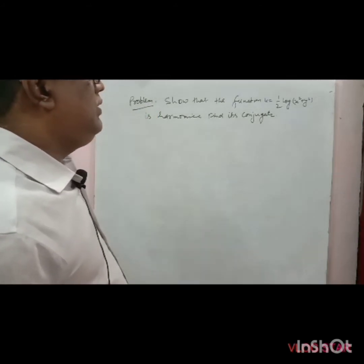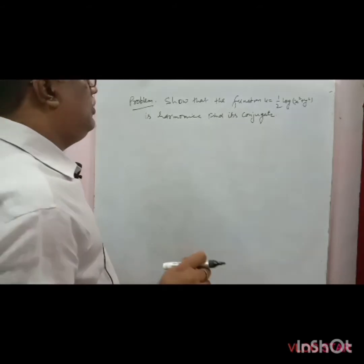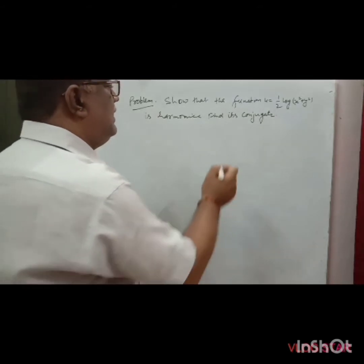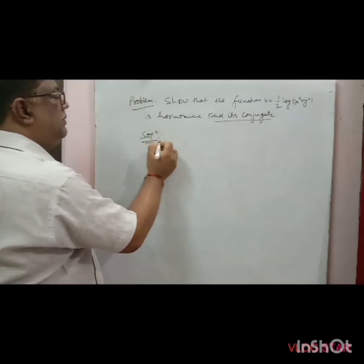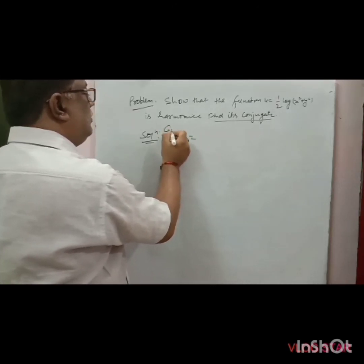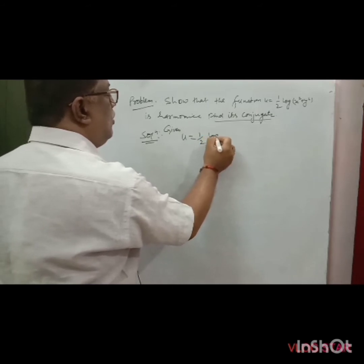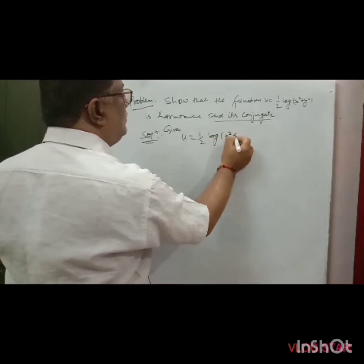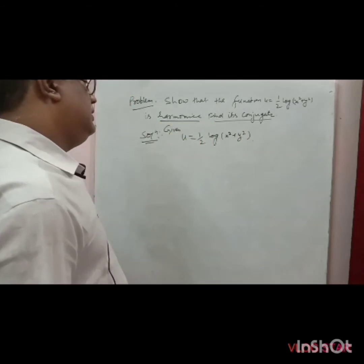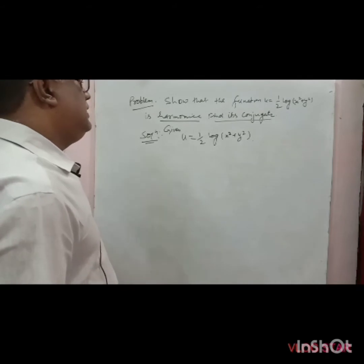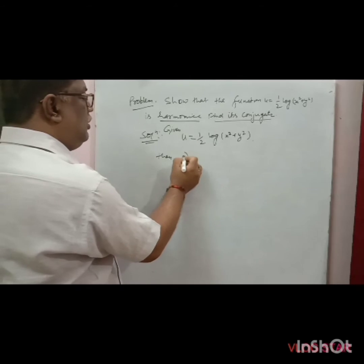Now we discuss a problem. We have to show that the function u = ½ log(x² + y²) is a harmonic function and find its harmonic conjugate. Solution: Given u = ½ log(x² + y²). First we prove it is harmonic by showing it satisfies the Laplace equation.